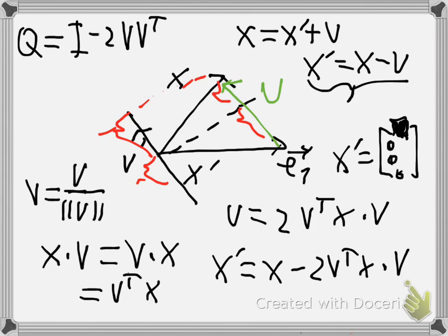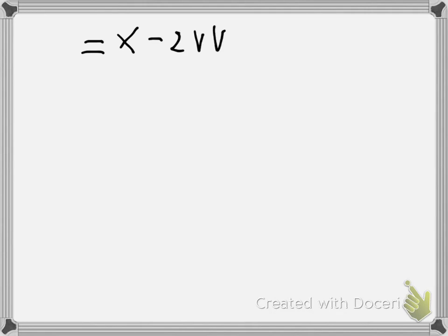Now we can rearrange. Since x' equals x minus u, we substitute u with two times v times v transpose x. Taking the unit vector v in front gives x' equals x minus 2 times v times v transpose x. We can then factor out x to get: x' equals the identity matrix minus 2 times v v transpose, all times x.